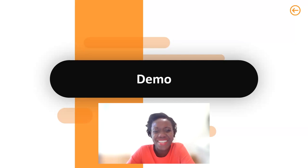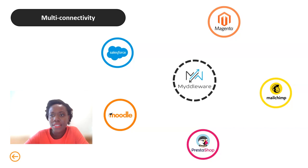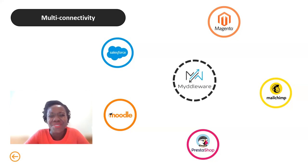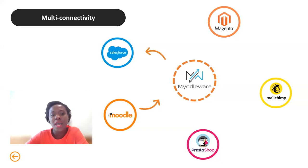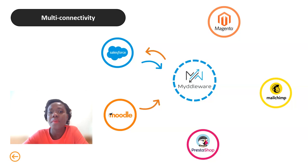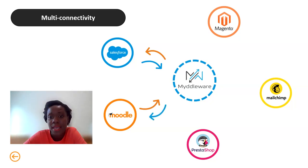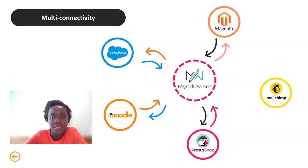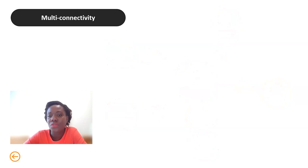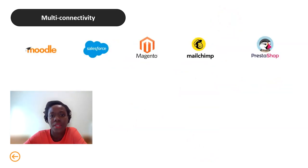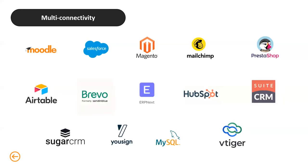As Alexei showed, you can connect your apps using Mydleware — not only two apps, but several apps together. You could have your Moodle, an online store like PrestaShop, a CRM, or even two CRMs, and Mydleware can enable multi-connectivity. We are open to many apps and are willing to do custom-made connectivities as well. These are a few apps currently connected to Mydleware, but we have many more to come and can do more according to your needs.